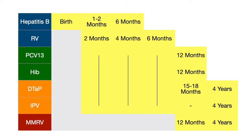The MMRV vaccine covers against measles, mumps, and rubella — which can present similarly with some URI symptoms but are also unique — and varicella, which is your chicken pox. This vaccine is given at one year of age and then at four years of age, so it's pretty easy to remember. This table summarizes all of the vaccines given up until four or five years of age.